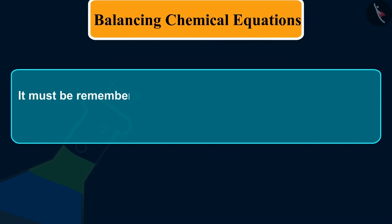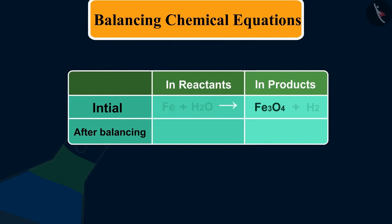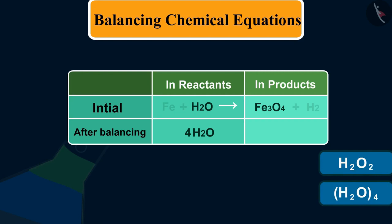It must be remembered that we cannot alter the formulae of the compounds or elements involved in the reactions. First, we try to balance Fe₃O₄ and the element oxygen in it. To balance the oxygen atom, we can put coefficient 4 as 4H₂O. But remember, we cannot write H₂O₂ or (H₂O)₄ like these.